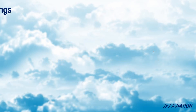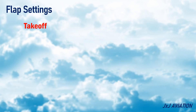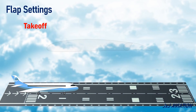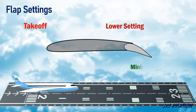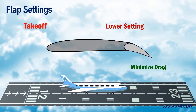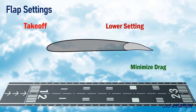During take-off, a lower setting of the flaps is selected, or a smaller angle of extension of the flaps. This is to minimize drag as much as possible. After take-off, the flaps are retracted completely to reduce the drag generated by the flaps.